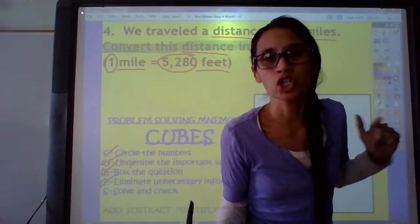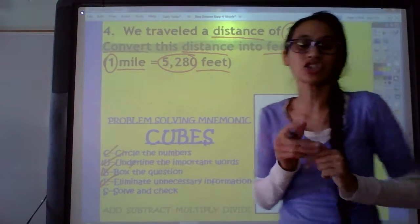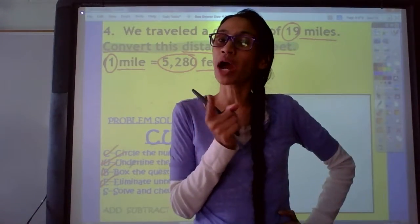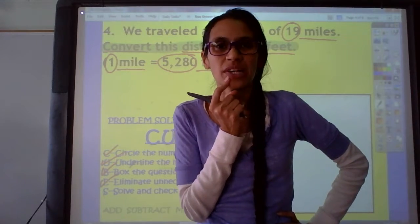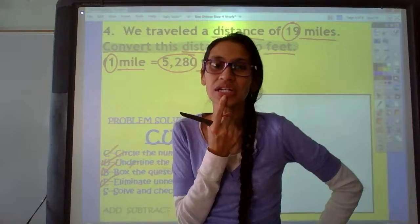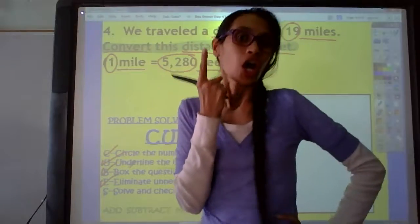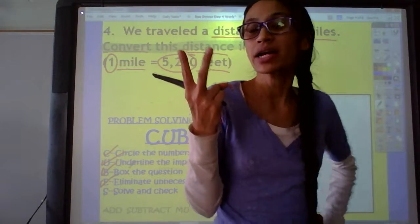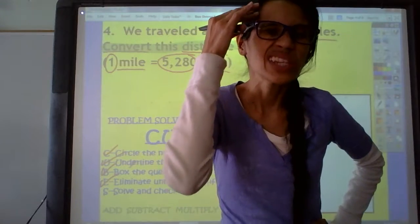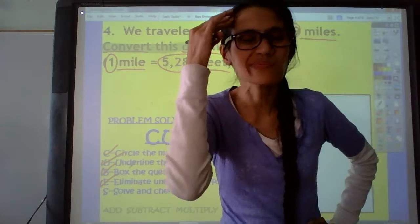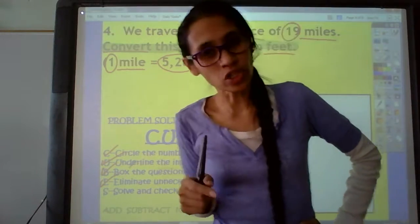And the last step in our Cubes clues is the S step. And the S step says to solve and check. So to solve the problem, we need to think about what operation we need to do. Not a doctor operation. A math operation. Are we going to add? Are we going to subtract? Are we going to multiply? Or are we going to divide? Think about it with that smart mind of yours. Yes. There are two ways we can work that out. Let me show you.